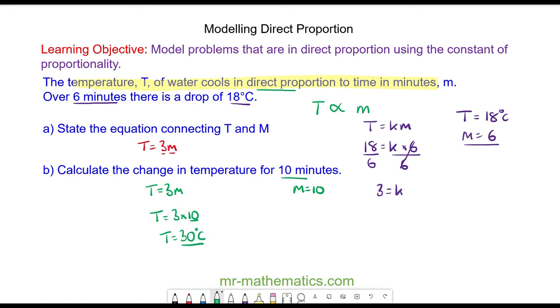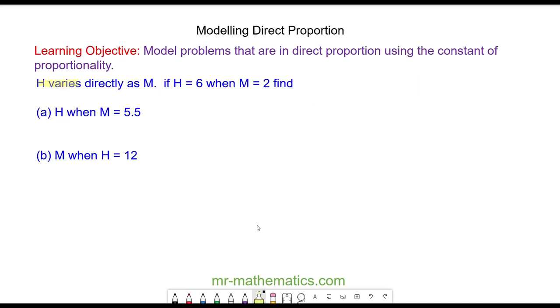Let's try one more question. In this question, we have h varies directly as m, and this means that h and m are in direct proportion. Do you want to try and do this question yourself by pausing the video? Okay, so we have h is in direct proportion with m. This tells us that the two units are in proportion. We need to use k to tell us how they are in proportion.